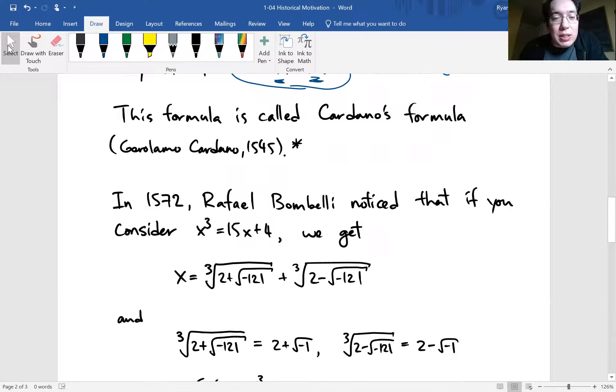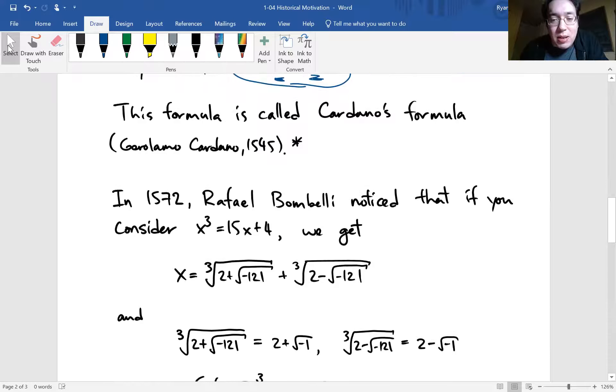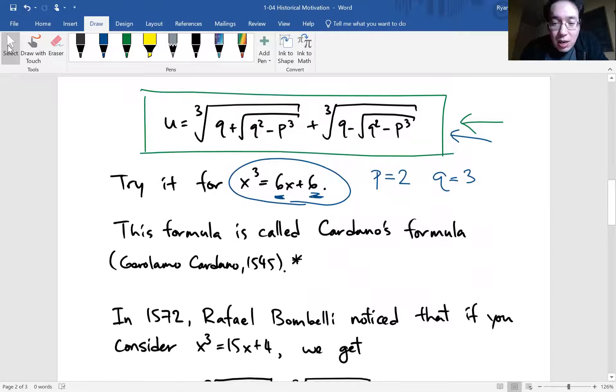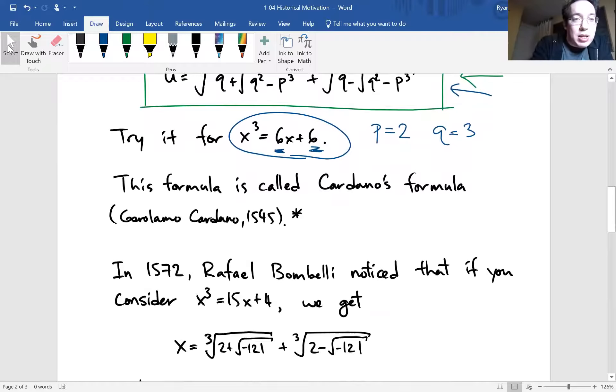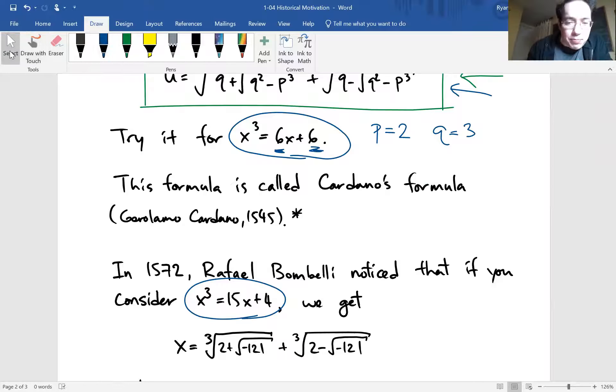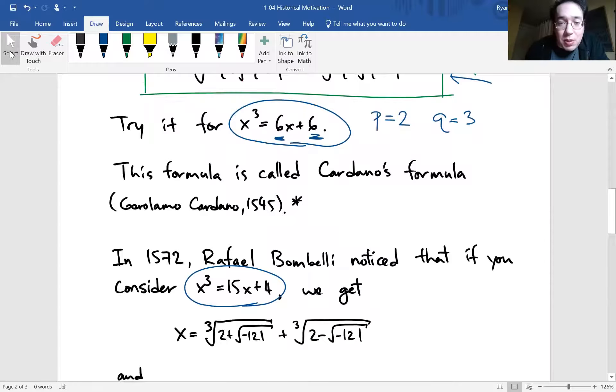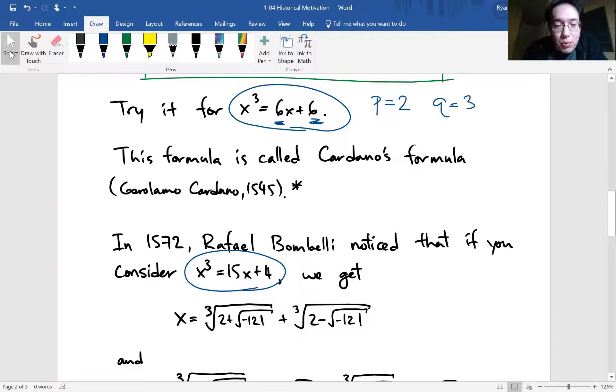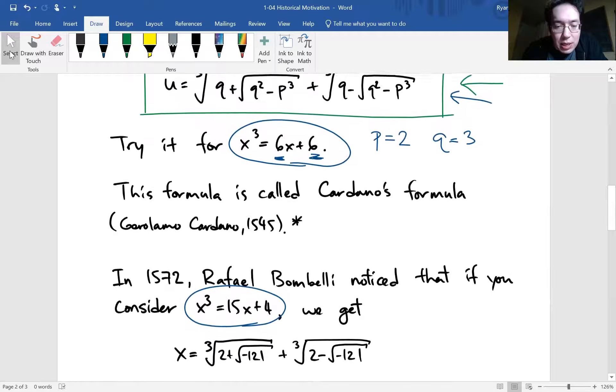Okay. So this motivation was outlined by Rafael Bombelli. So he was using this Cardano's formula in this particular cubic formula. Okay. So it looks very similar. So for p, we have to divide 15 by 3. So p is equal to 5 and q is 4 divided by 2. So it's equal to 2, right?